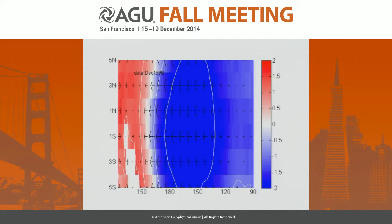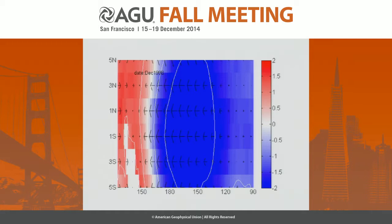This is a still from the first quaternion mode, for a particular month — it happens to be December 1989. You can see there are arrows on it. The arrows are the east-west wind stress, the white contours are the magnitude of the wind stress, and the colors are the sea surface temperature anomalies.